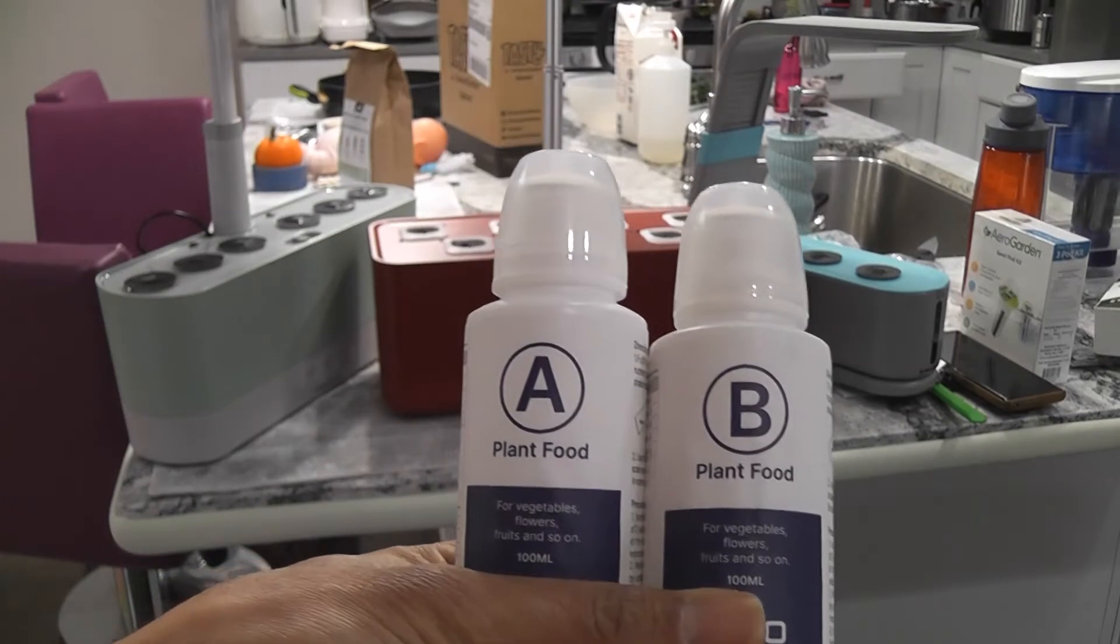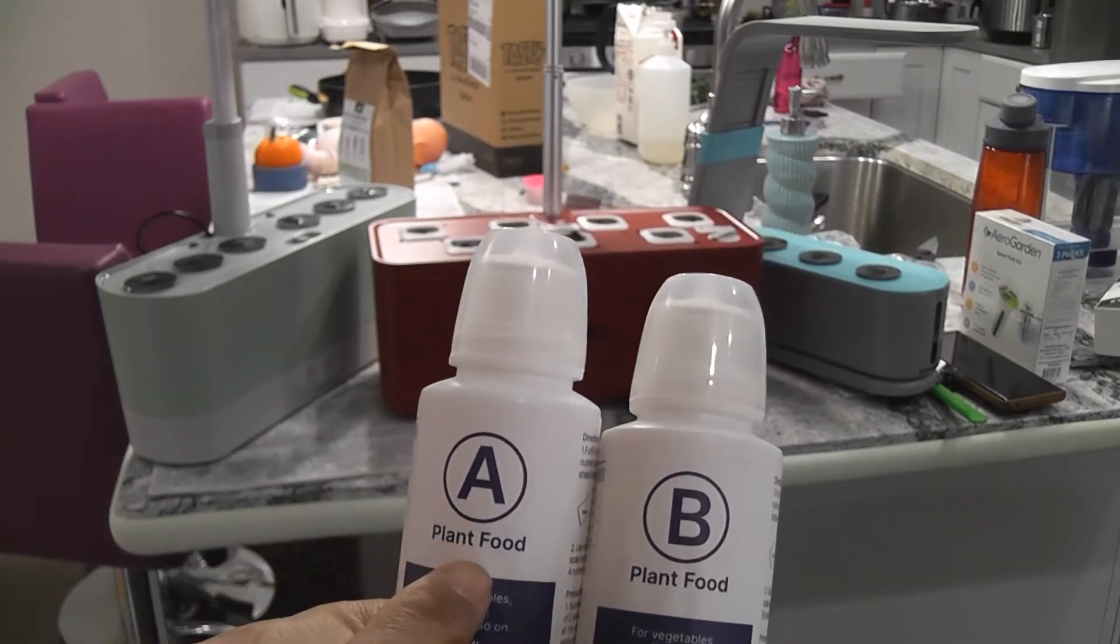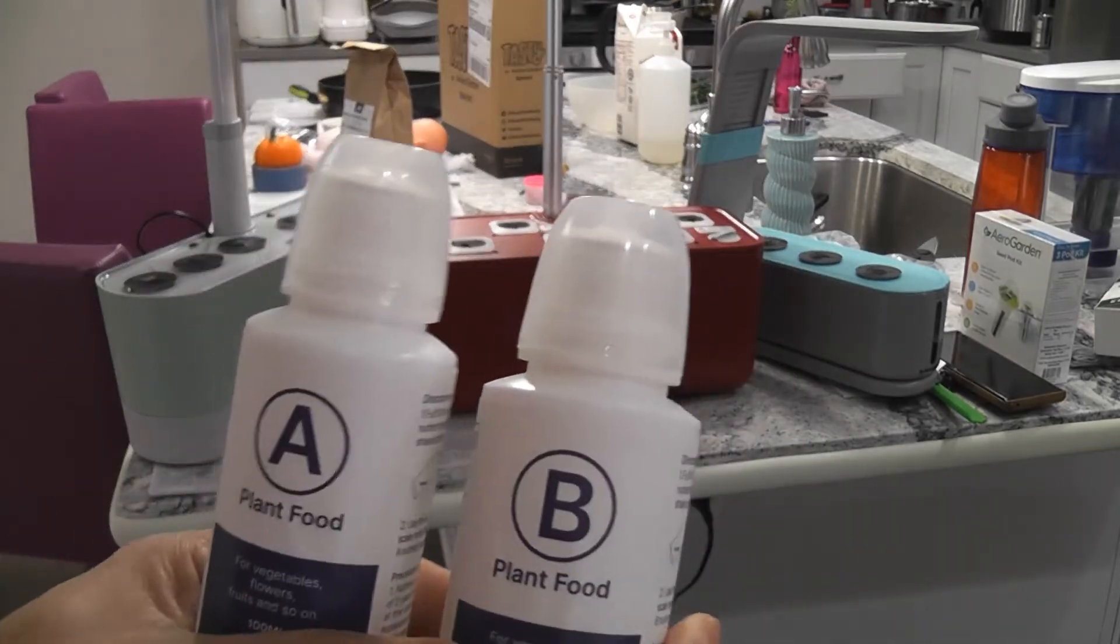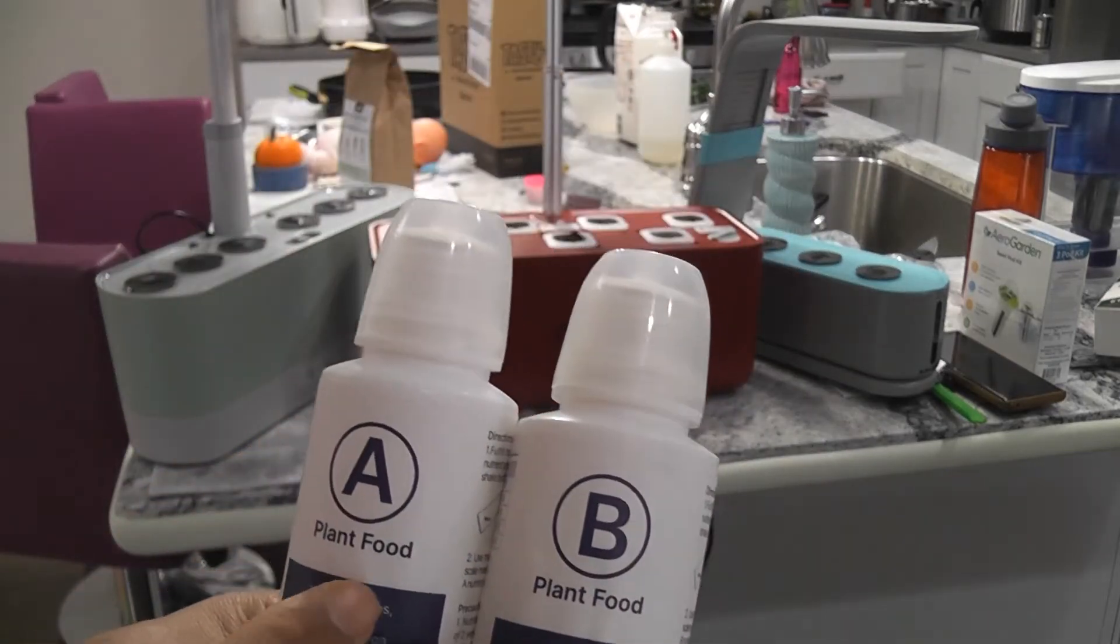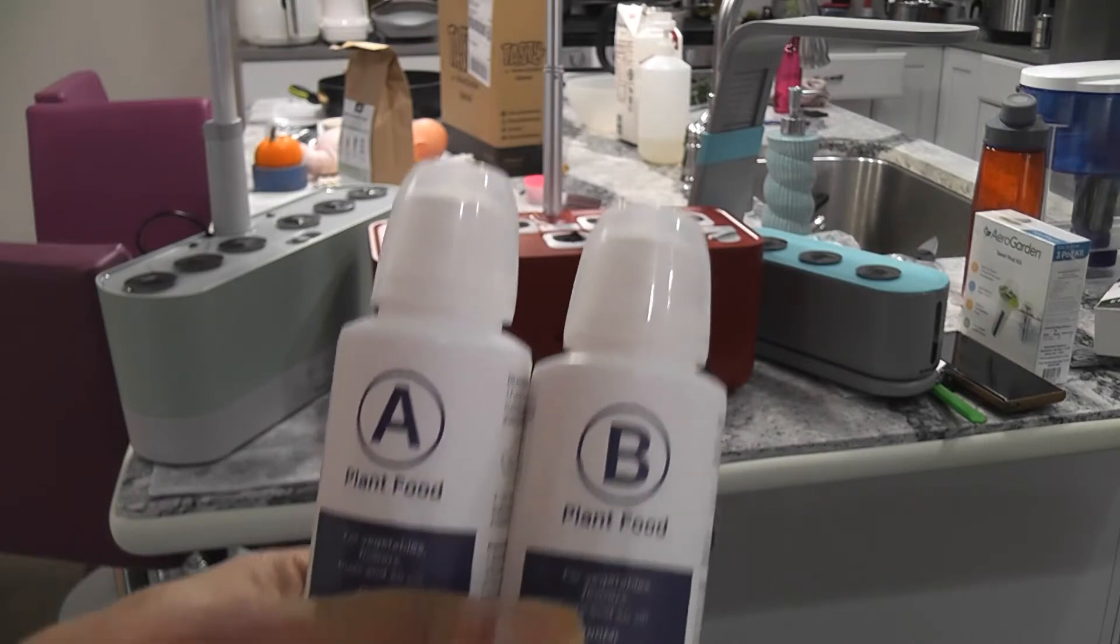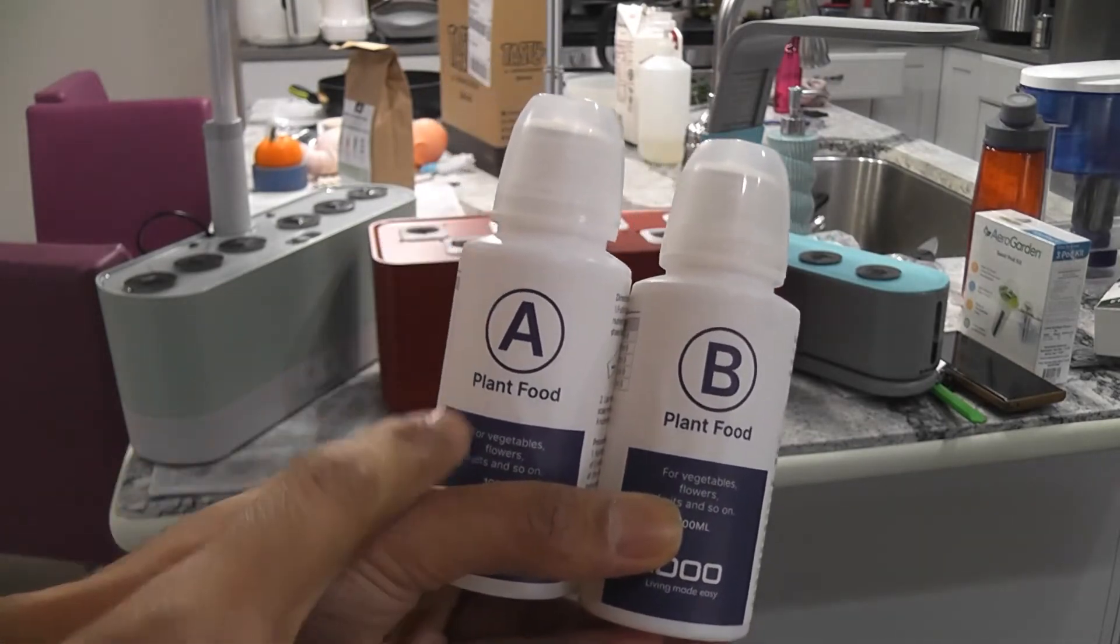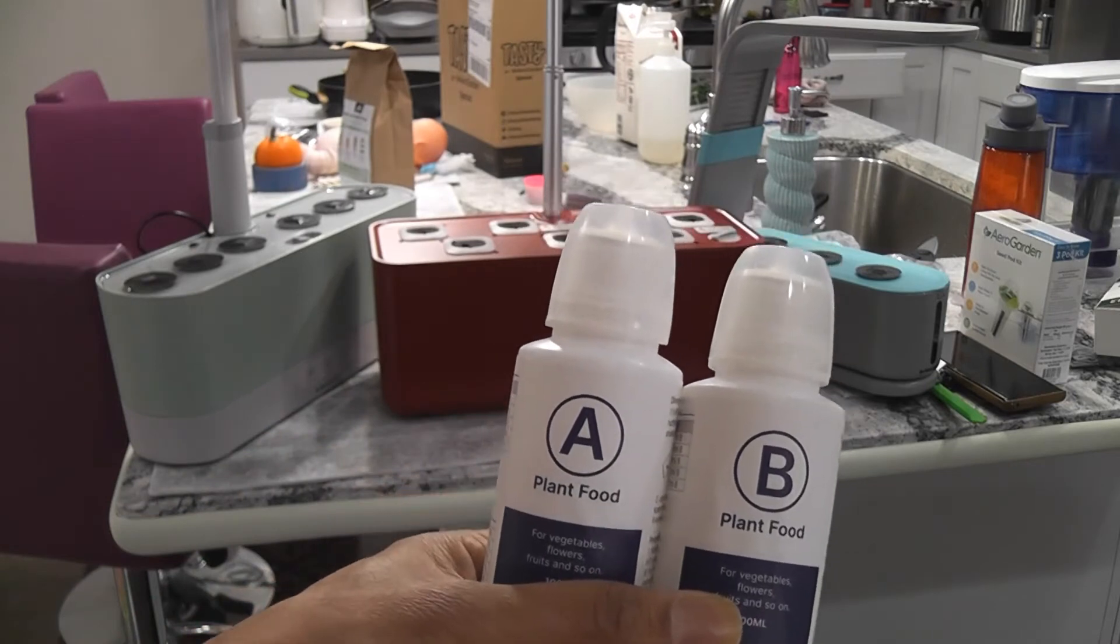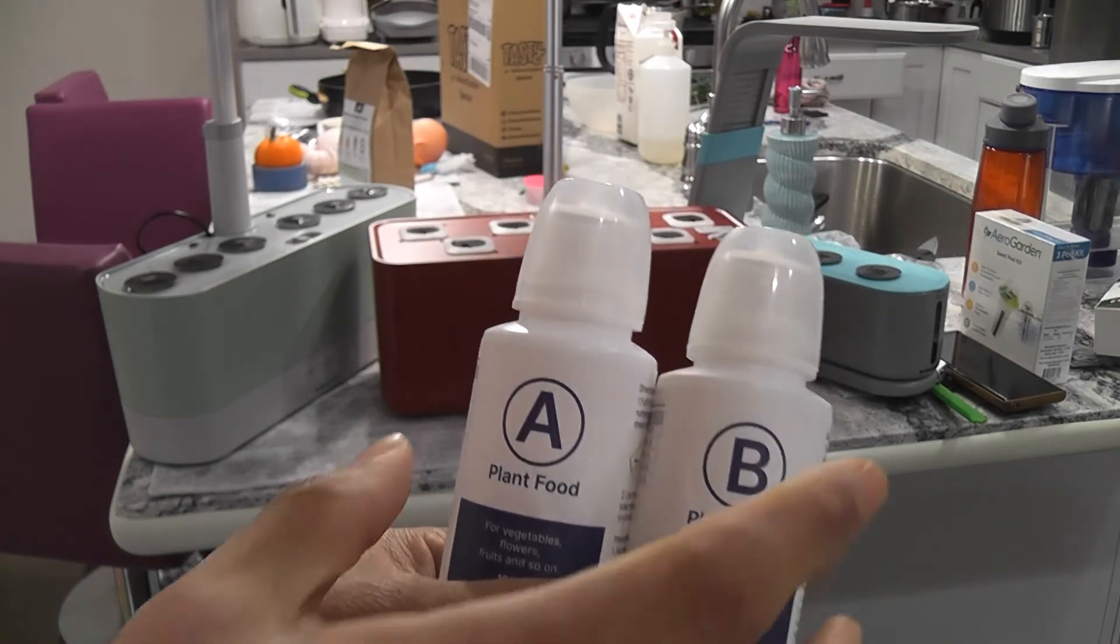Let's see the nutrition. It comes with two types of dry nutrients. We need to mix each bottle with 100 ml of clean water and shake it to dissolve everything. It took 3-4 minutes of shaking to dissolve the solids completely. This is good to go up to 5 months after mixing with water.